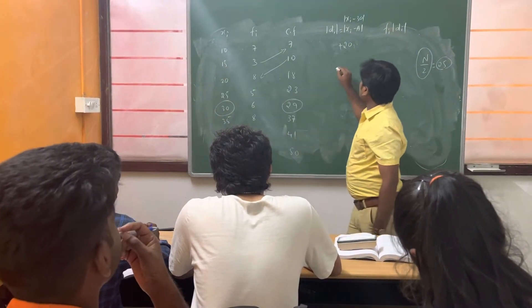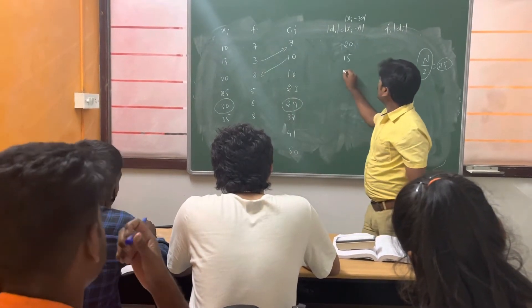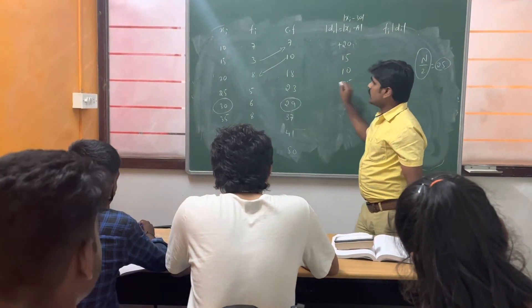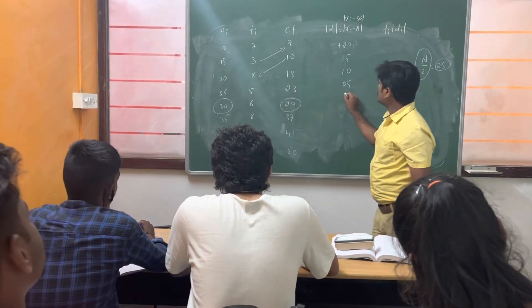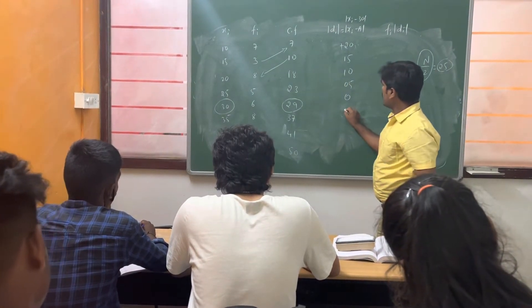Next for this, 15 minus 30, it is 15. Then 20 minus 30, 10. 25 minus 30, 5. Then 30 minus 30, 0. Corresponding to this, 35 minus 30, it is 5.